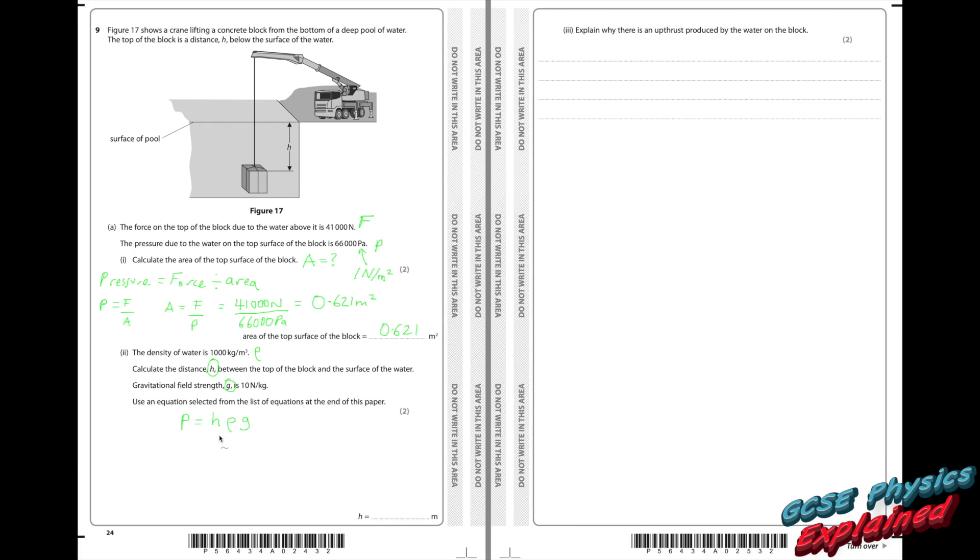So I've got the pressure equals the height times by the density times by the gravitational field strength. And we'll need to rearrange that to get H. So if I put a line under both of these, we need to get H by itself and on the top. So we need to get these two things shifted onto that side. So let's take the density first. It comes across the bridge onto this side. And because it's crossed the bridge, it needs to cross the line. So it'll end up on the bottom. I'll just rewrite that. Make it neat. So the pressure from the last question is 66,000. The density is 1,000 and gravity is 10. And that equals 6.6 metres.